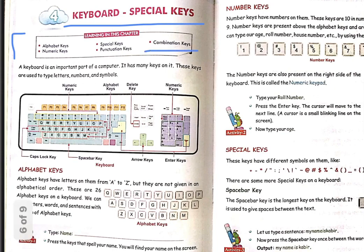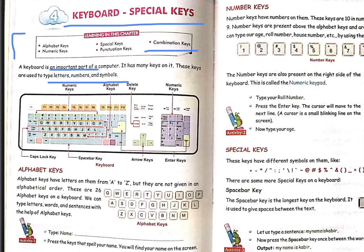A keyboard is an important part of the computer. It has many keys on it. These keys are used to type letters, numbers, and symbols. So the keys help us type letters, numbers, as well as some symbols.